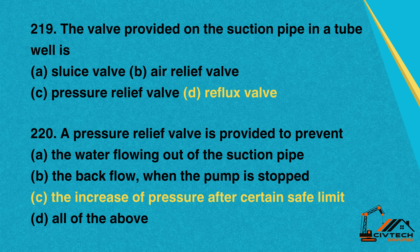Question 219: The valve provided on the suction pipe in a tube well is. A. Sluice valve. B. Air relief valve. C. Pressure relief valve. D. Reflux valve. Correct option: D. Reflux valve.